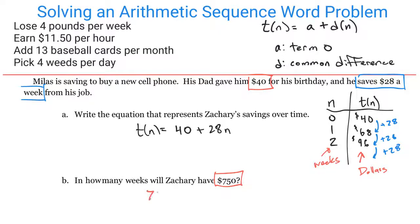We set this up: 750 = 40 + 28N. Now solve it like any other equation - subtract 40 from both sides to get 710 = 28N.